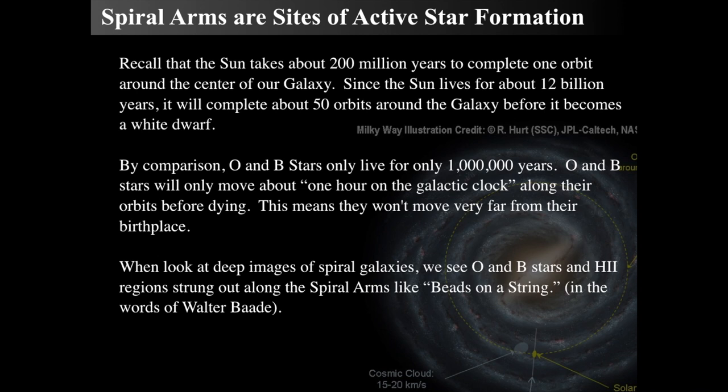We see the O and B type stars and the H2 regions which they light up, and they're in the spiral arms. That's what Walter Baade said, where the beads own a string.